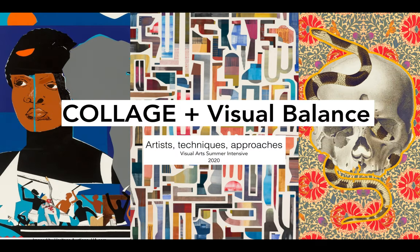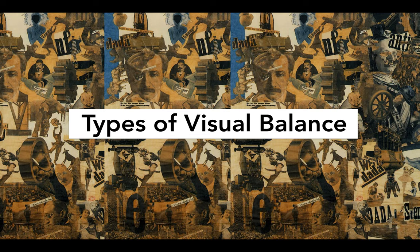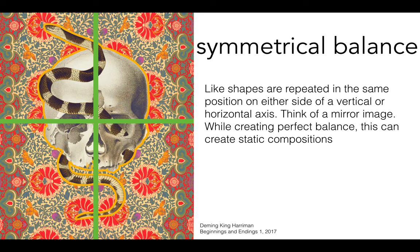Today we're going to talk about collage and visual balance. Visual balance is the arrangement of elements in your composition. Composition is the foundation of all elements of art, whether it be sculpture, 2D design, painting, or photography. The arrangement of elements is the most essential aspect to how the viewer will engage with the work.